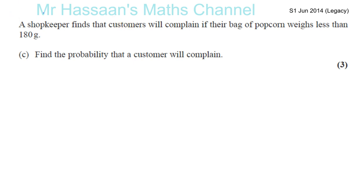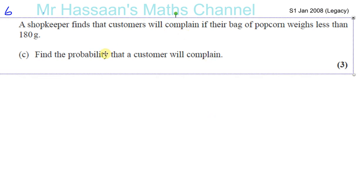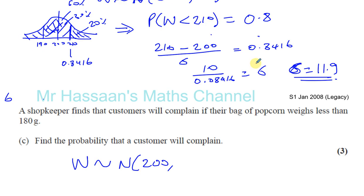Now for question 6C from January 2008, Lacey Paper. In 6A and 6B, we were told that the weight of the bags of popcorn are normally distributed with a mean of 200, and we worked out the standard deviation was 11.9.